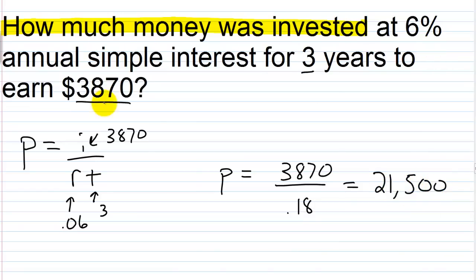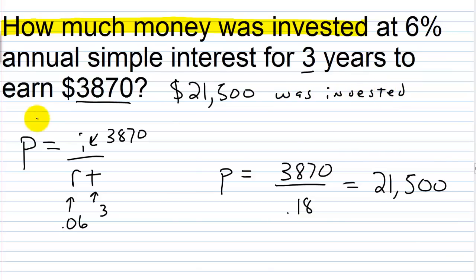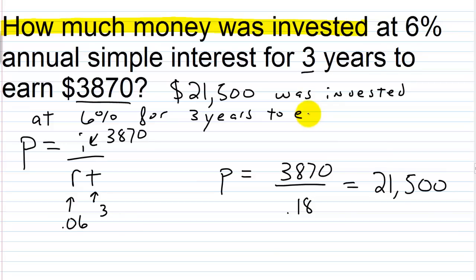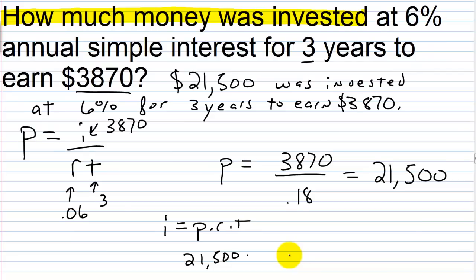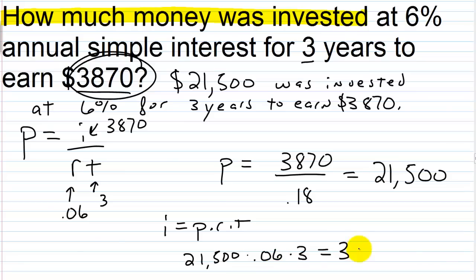Performing the division, 3870 over 0.18 gives us 21,500. So twenty-one thousand five hundred dollars was invested. We can verify with i equals p times r times t: 21,500 times 0.06 times 3. Twenty-one thousand five hundred times 0.06 is 1290, then times three gives 3870 — which matches. Our answer is correct.